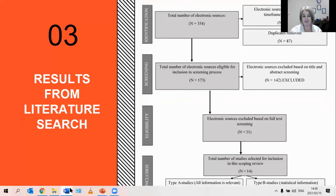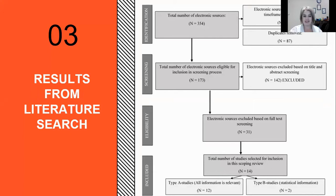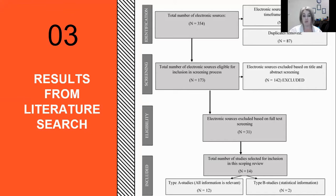We performed searches in the titles and abstracts of articles in the databases, and then developed inclusion and exclusion criteria to narrow down the searches. The initial search returned a total of 354 citations. We imported these into the Mendeley database management system. We had to exclude about 94 as they fell outside of the time frame and language requirements, and about 87 more which were duplicates. Applying the inclusion and exclusion criteria to the title, abstracts, and later to the full text eliminated about 142 more articles. We were left with a total of 14 articles that were valuable to use for the study.